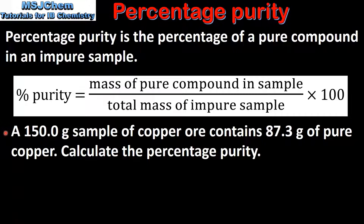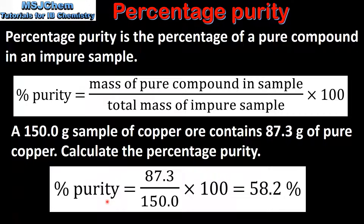A 150 gram sample of copper ore contains 87.3 grams of pure copper. To calculate the percentage purity, we divide the mass of the pure copper, which is 87.3 grams, by the total mass of the impure sample, which is 150 grams, and then multiply by 100. This gives us 58.2%.